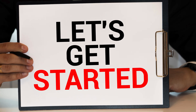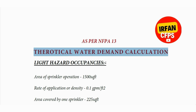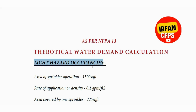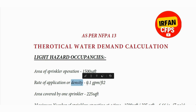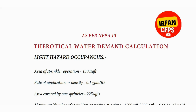As per NFPA 13, we are going to calculate the theoretical water demand for a sprinkler system. Based on light hazard occupancies, the area of sprinkler operation or design area will be 1500 square feet. As per area-density curves, the rate of application or density will be 0.1 GPM per square foot. The area covered by one sprinkler for light hazard occupancies per NFPA 13 will be 225 square feet.